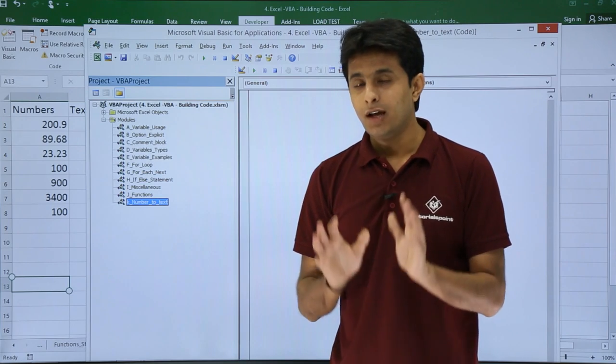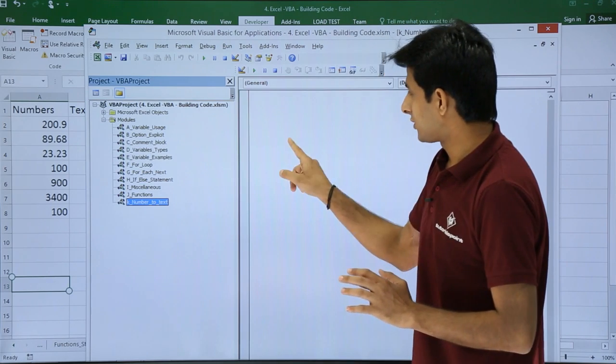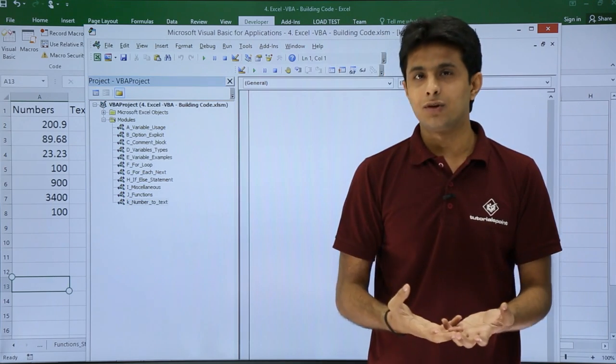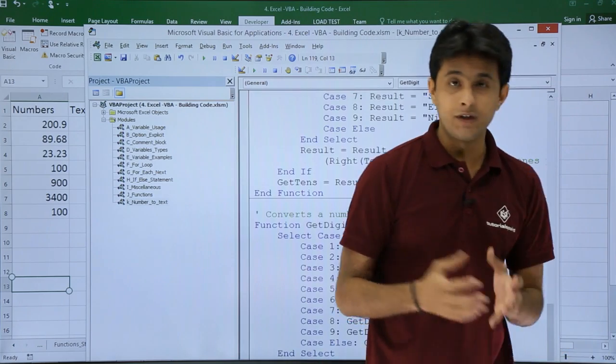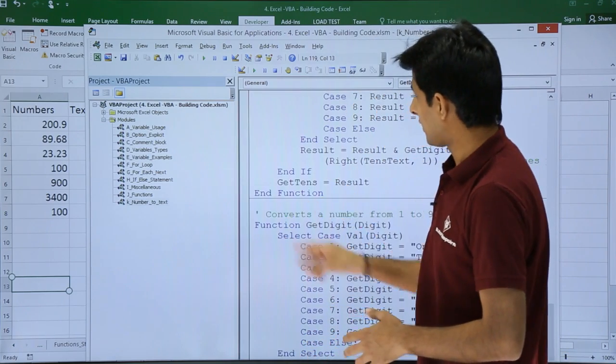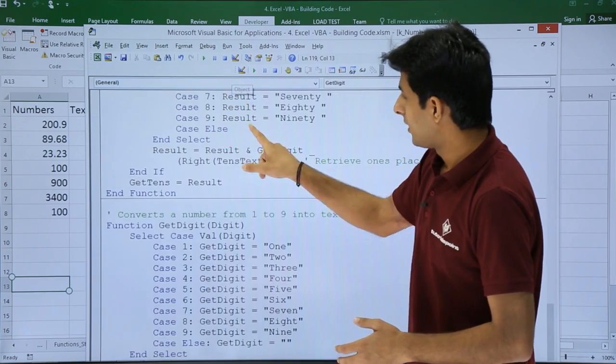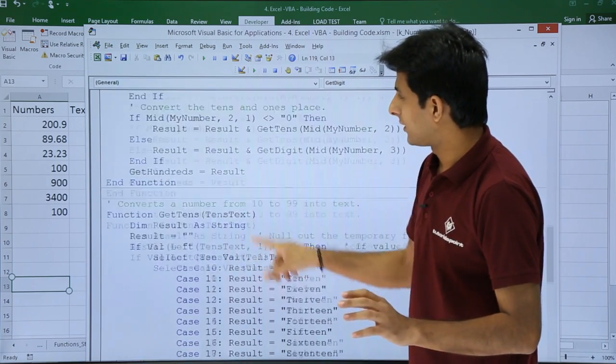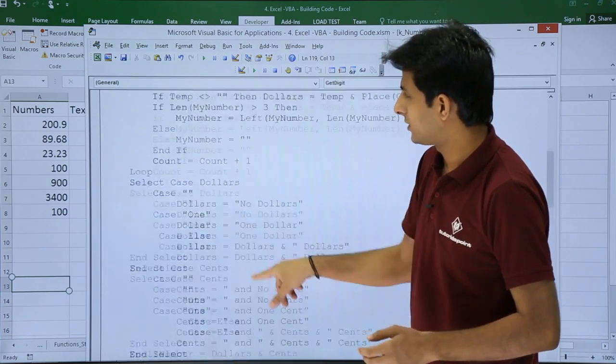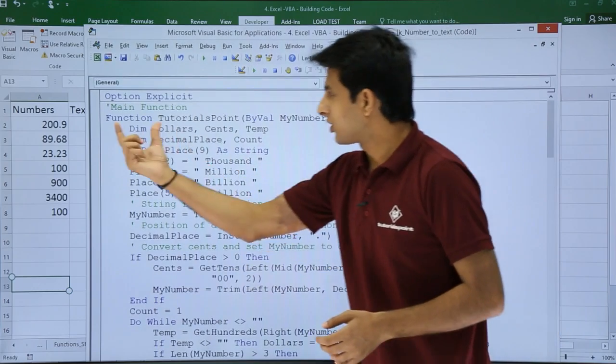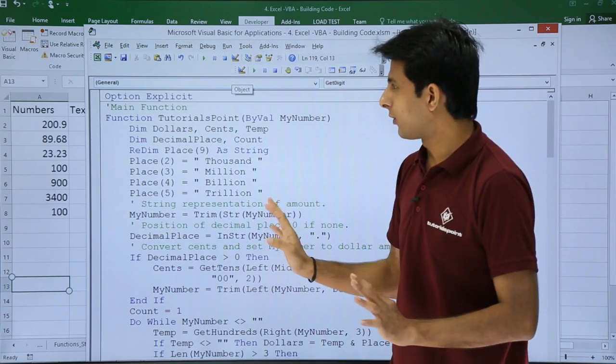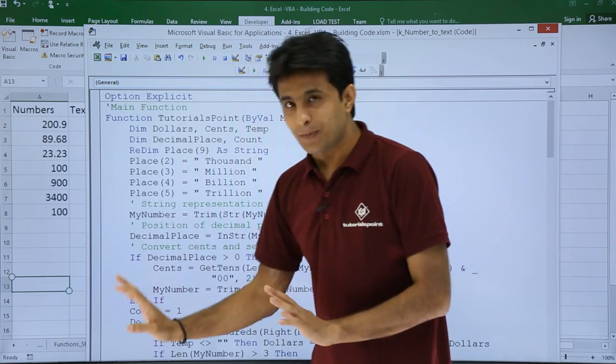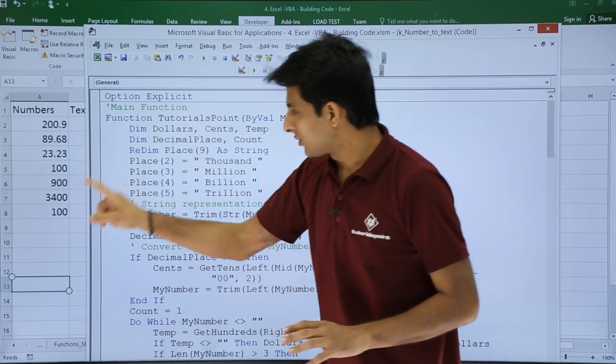After creating a module, you have to click here and paste the code. I'll just press Control+V for paste. I'll close this. That's the same code which I have. I'll show you the function name - the function name is TutorialsPoint. After pasting the function, don't do anything. Just come to this place.